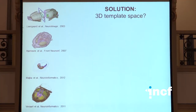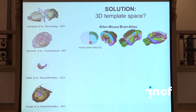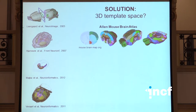The solution is probably to have three-dimensional atlases, and over the last ten years many such spaces have been emerging, starting with reconstructions of the existing anatomical atlases of the rat brain and moving towards using high-resolution MRI templates. One of the really powerful resources at the moment is the Allen Mouse Brain Atlas, which is based on a series of coronal sections that have been reconstructed as a three-dimensional volumetric atlas that can be sliced in different orientations.